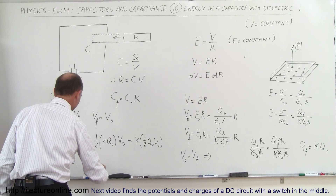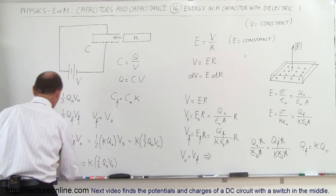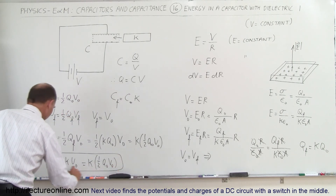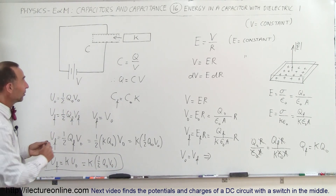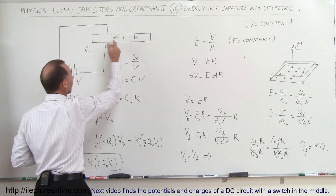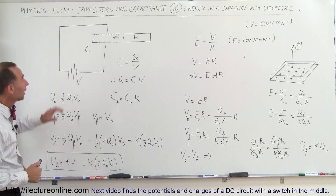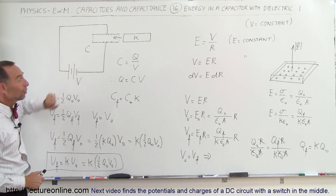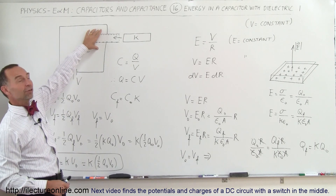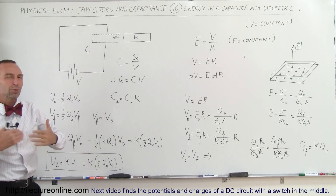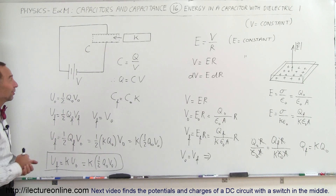Since one-half times Q_initial times V_initial is the initial energy in the capacitor before we inserted the dielectric, we can say U_final equals K times U_initial. That's how we find the final energy on the capacitor after inserting the dielectric when the capacitor is connected to a battery. This is a different result than when the capacitor is not connected to a battery, because in that case the potential difference is not maintained.